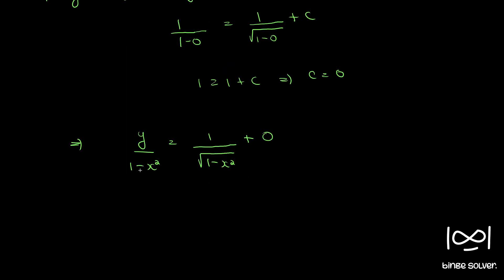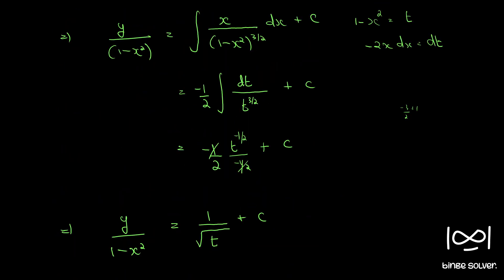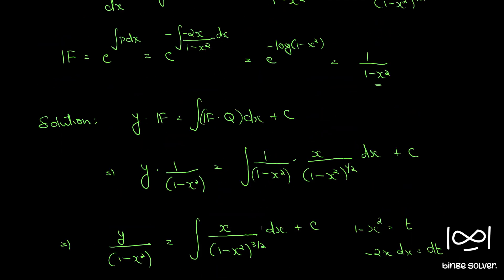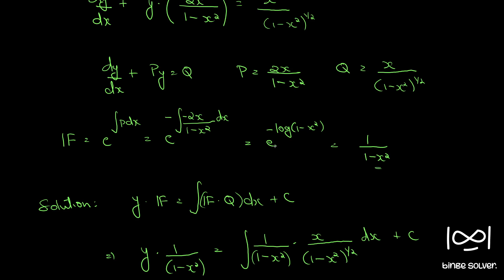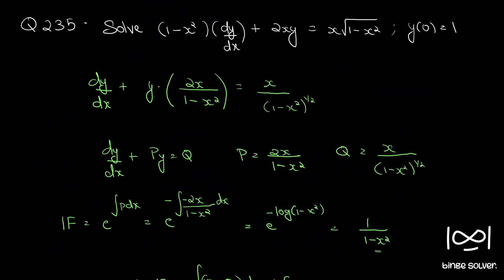Using C equals 0, we bring (1 minus x squared) to the other side to get y equals (1 minus x squared) divided by the square root of (1 minus x squared), which equals the square root of (1 minus x squared). This is the final solution. We identified the integrating factor, recognized the standard linear form, and solved using the initial condition. This is the solution to Question 235.